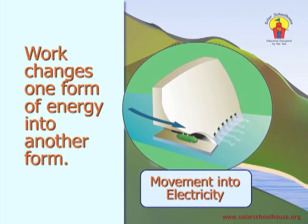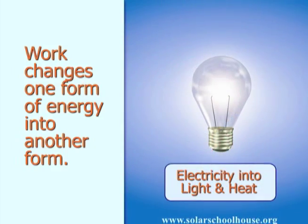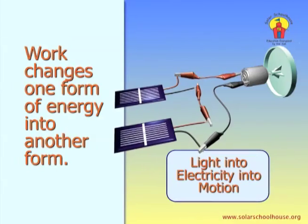The energy of the moving water is changed or converted by the generator into electrical energy. Electrical energy can also be changed into other forms, like light energy or heat. A light bulb works by converting electrical energy into the energy of light and heat. A solar cell changes the energy of sunlight into electrical energy. This electrical energy can power a motor and be converted into movement energy.